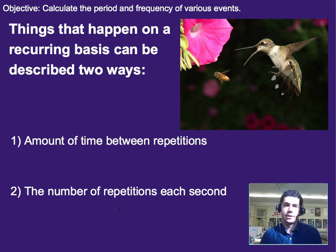All right, so to get started, things that happen on a recurring basis can be described in two ways. The first way is the amount of time between repetitions. So if you've got a hummingbird here, the amount of time it takes for one flap of its wings.